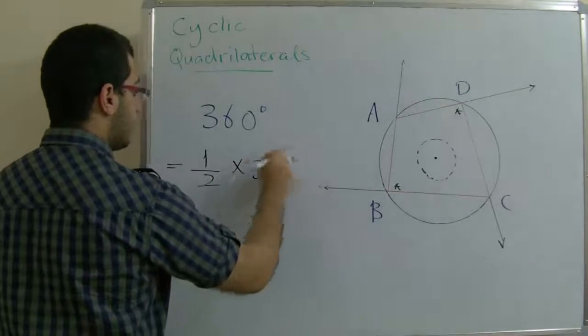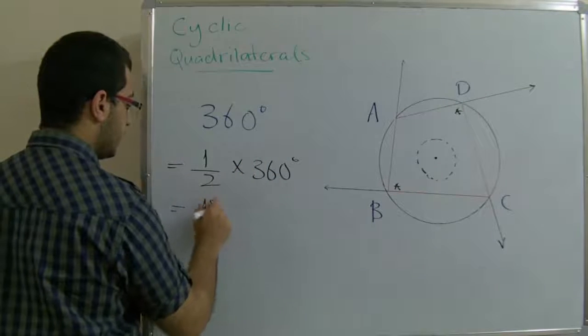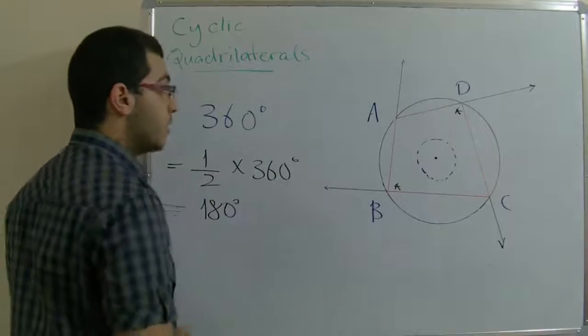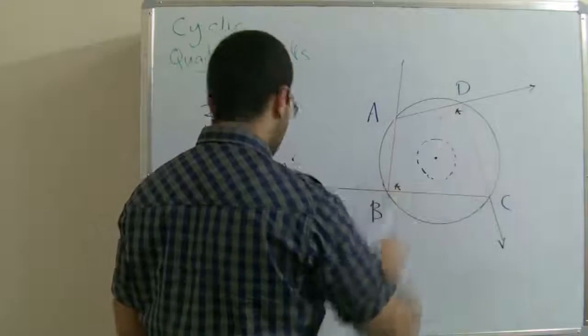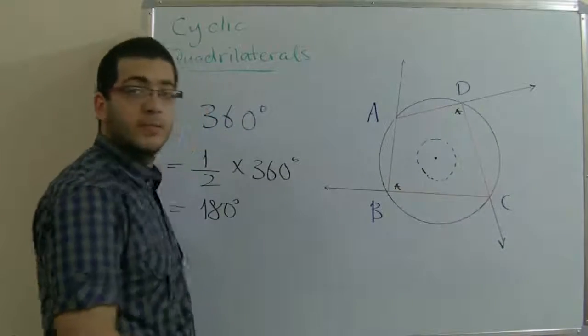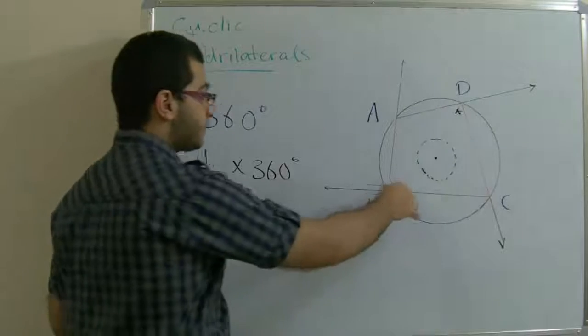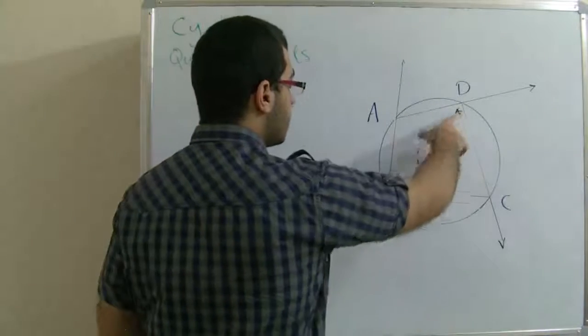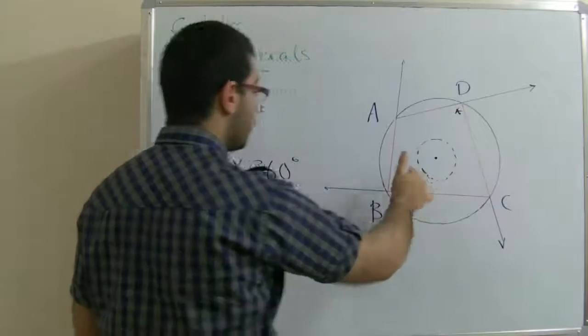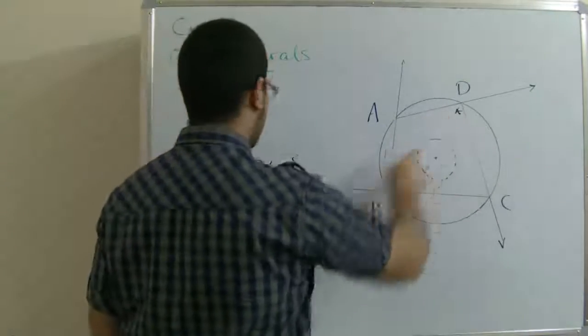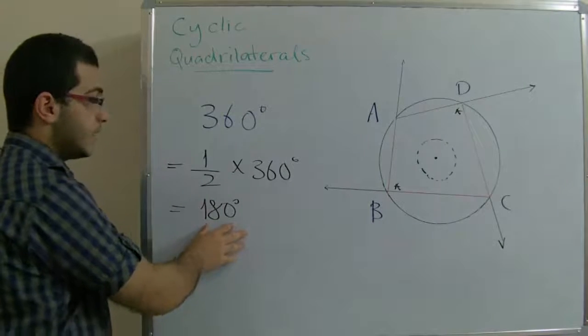Angle B plus angle D equals half 360, which is 180 degrees. Each two opposite angles in the cyclic quadrilateral are complementary to each other, so that both sum together gives 180 degrees.